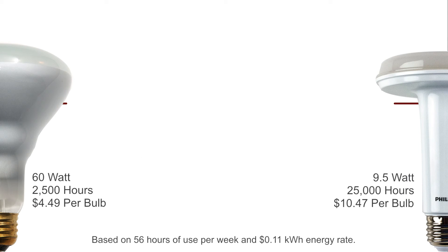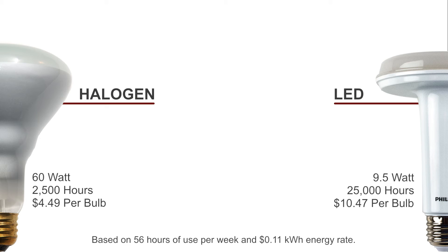Let's do an example together. On the left we have a halogen reflector and on the right we have the LED equivalent. We will base our calculation on 56 hours of use per week and an electricity rate of 11 cents per kilowatt hour. Let's do the halogen first.